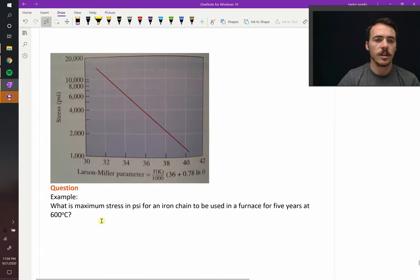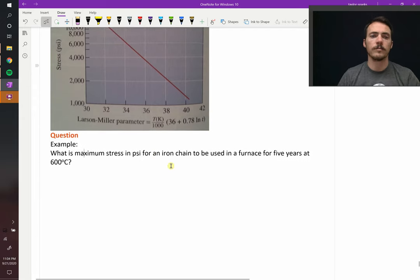How do you use this? Consider the following scenario. Let's say we have this question: what is the maximum stress in PSI for this iron chain if it's going to be used in a furnace for five years at 600 degrees Celsius? Here we're given the Larson-Miller parameter.